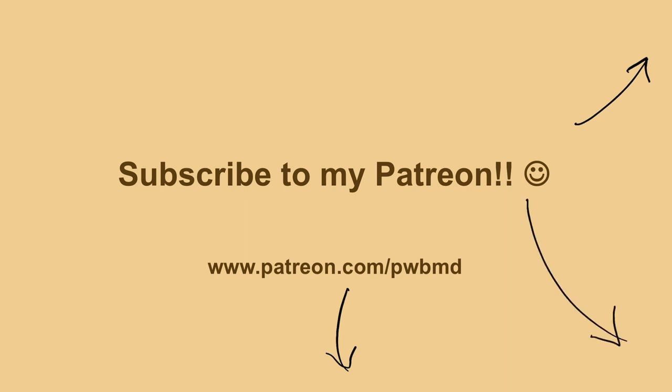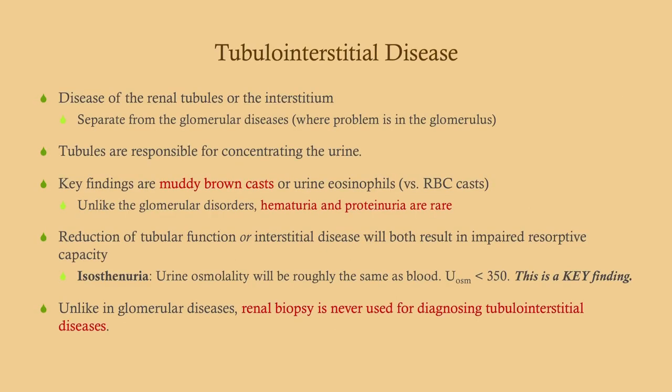Tubulointerstitial disease is a disease of either the renal tubules or the interstitium, and this is separate from the glomerular diseases where the problem is in the glomerulus. The tubules are responsible for concentrating the urine, so if you have a tubular disease you are going to have a more dilute urine.